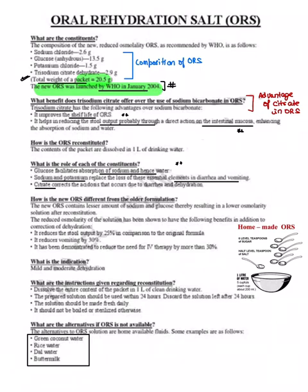Why is the new ORS composition slightly different? This new ORS contains lesser amounts of sodium and glucose - both are 75 - resulting in lower osmolality from 311 to 245. Benefits: it reduces stool output by 25%, reduces vomiting by 30%, and has been demonstrated to reduce the need for IV therapy by 30%. These are the advantages of reduced osmolality ORS. Indication: mild to moderate dehydration.